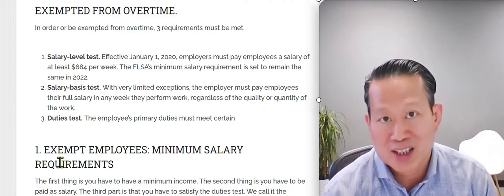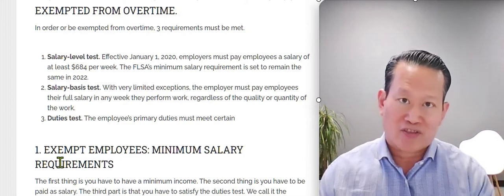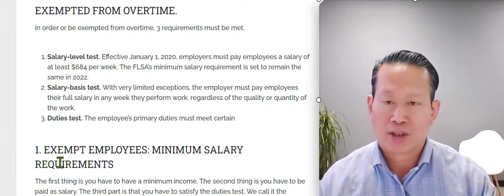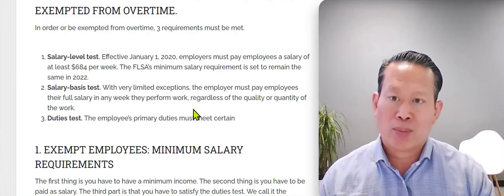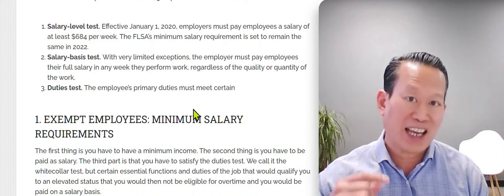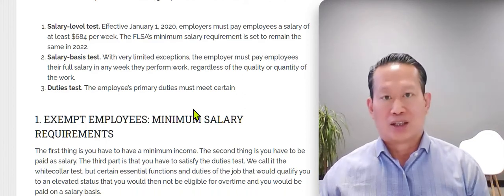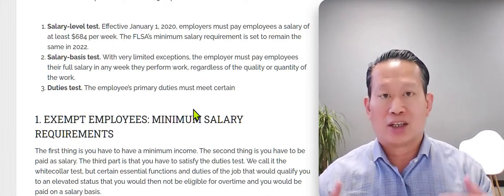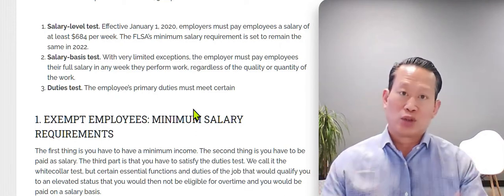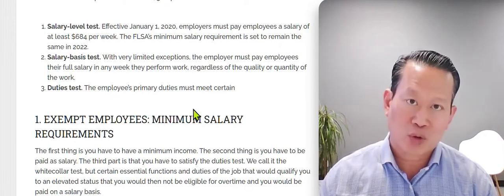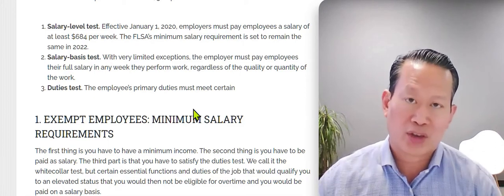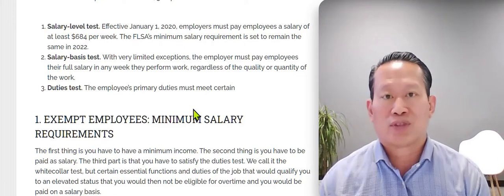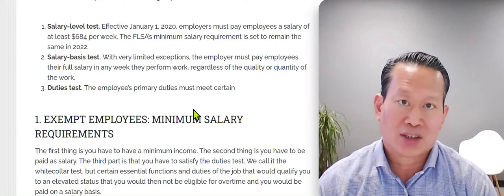The first requirement of an exemption under the Fair Labor Standards Act is that you have to pay the required amount each week — the minimum amount is $684 a week. If you don't pay the employee at least $684 a week, then you void the exemption. You either have to increase their pay to reach the minimum of $684 per week, or you have to reclassify them as a non-exempt employee.